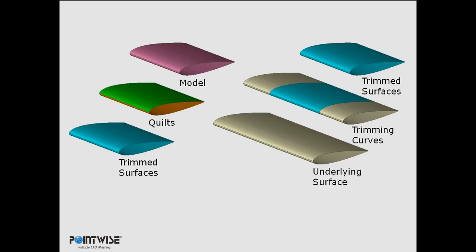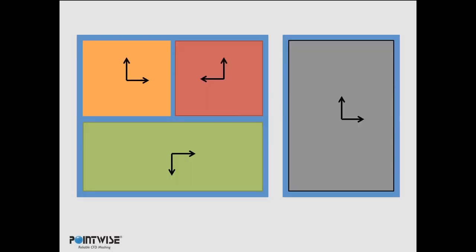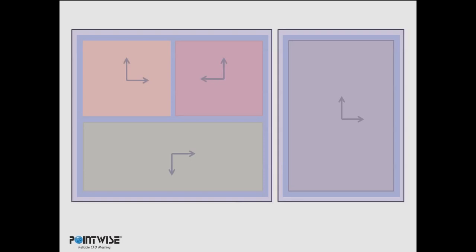The model is the glue that holds everything together — a watertight representation of the quilts, which means a watertight representation of the geometry. That's beneficial because if you have a watertight representation and mesh it, you're guaranteed that surface mesh will be watertight. We need a watertight surface mesh to fill the volume. On the left and right I have two cartoon quilts, each consisting of a number of underlying trim surfaces with their own UV parameterization. The quilt acts as glue holding those trim surfaces together. When we mesh, each quilt gets its own domain, and you can imagine two quilts being in the same model stitched together.